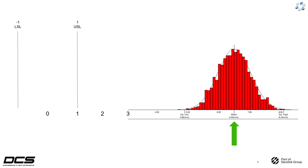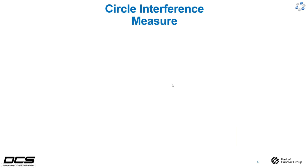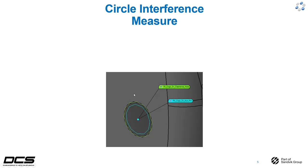Just watch out for that and ensure that after selecting the spec mode you are also using the right spec limits. Now we'll move on to a circle interference measure and make the case for when it is a good idea to use absolute as your spec mode. In this case we have a ten millimeter hole and an eight and a half millimeter pin that we want to see if it fits into that hole using a circle interference measure.